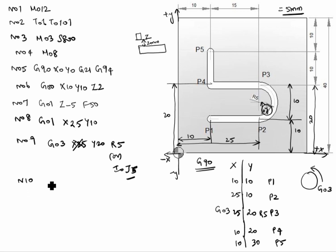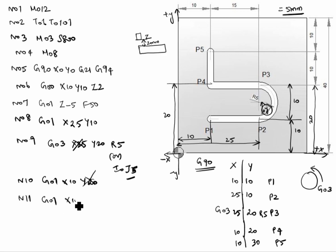N10: G01 X10, Y20 — the fourth point P4 is X10, Y20. Y20 was already written so no need to write it again. N12: G01 X10, Y30 — this is the P5 value; X10 was already written so we cancel the repeat. N12: G01 Z2 — the tool moves upwards, 2mm above the workpiece.